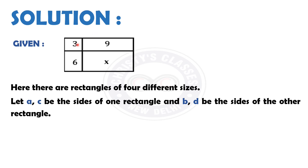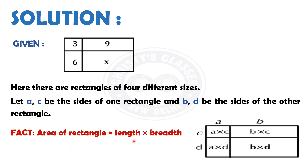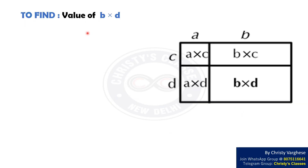Solution. The given figure has rectangles of 4 different sizes. Let A and C be the sides of one rectangle, and B and D be the sides of the other rectangle. We know that the area of a rectangle equals its length into breadth. Thus, the areas of the sub-rectangles will be as follows. We are required to find the value of B into D.